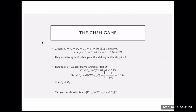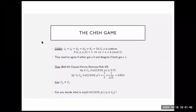They showed that for any classical correlation — any correlation from the convex hull of the deterministic ones — the maximum winning probability is bounded by 75%. This is easy to understand: the classical correlations form a polytope with a finite number of vertices, and since the game value is a linear functional, the maximum is achieved at a vertex. There are only 16 vertices to check, and all are ≤ 0.75.